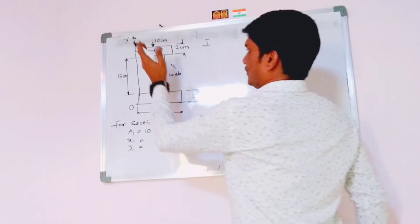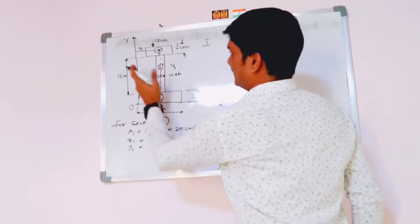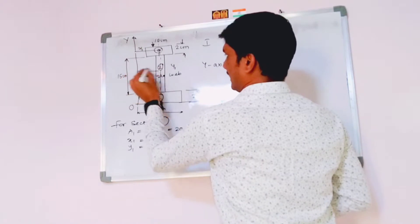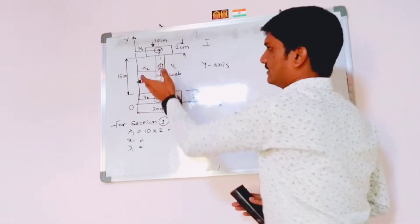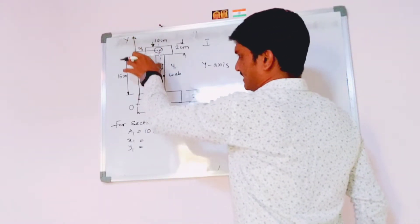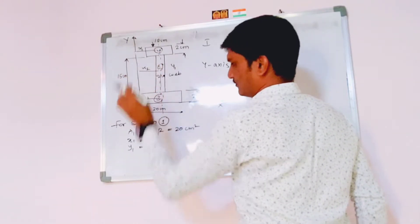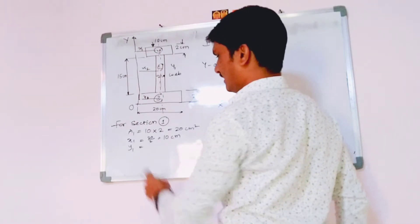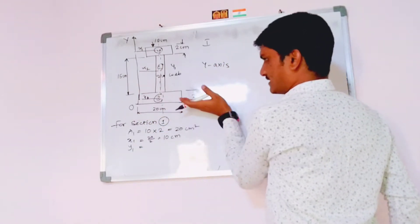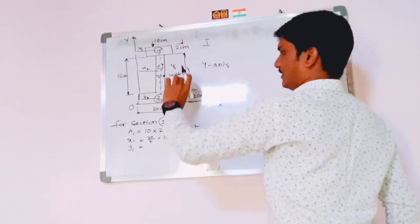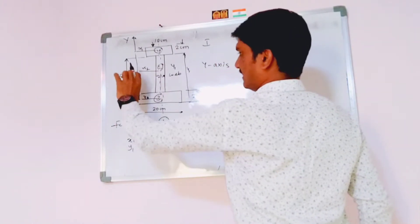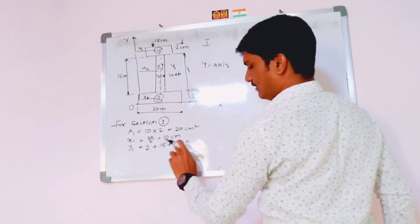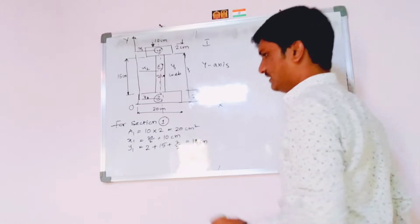The I-section is symmetric about the y-axis, so x1, x2, and x3 are all the same. Half of the total width 20 gives x1 = x2 = x3 = 10 centimeters. For y1, starting from reference line OX: the bottom section is 2 cm, the web is 15 cm, plus half of section 1's height (2/2 = 1), giving y1 = 2 + 15 + 1 = 18 centimeters.